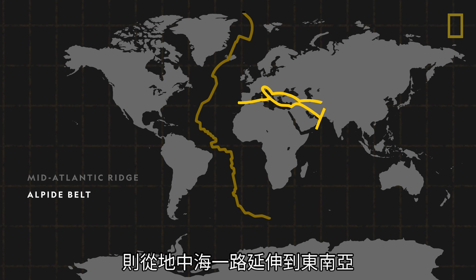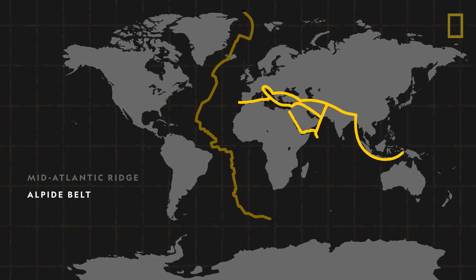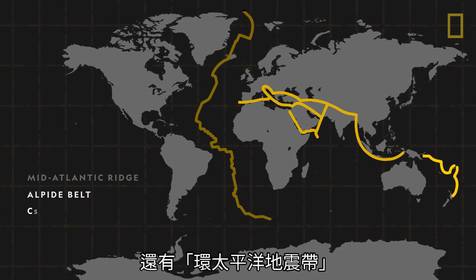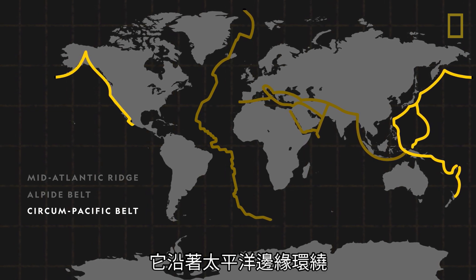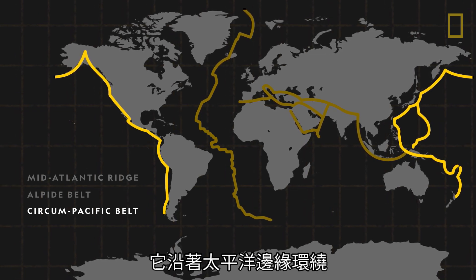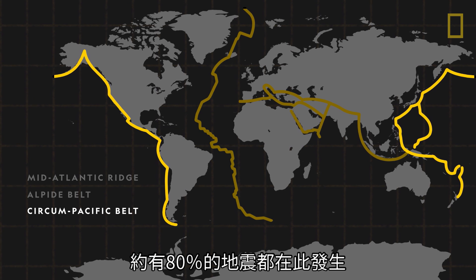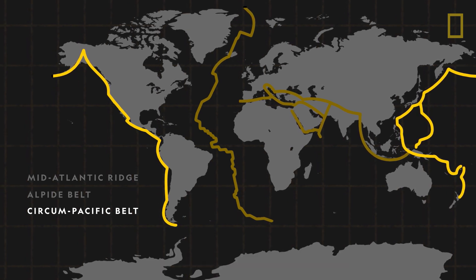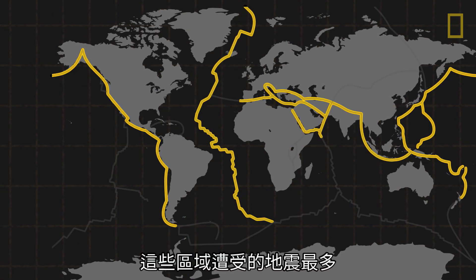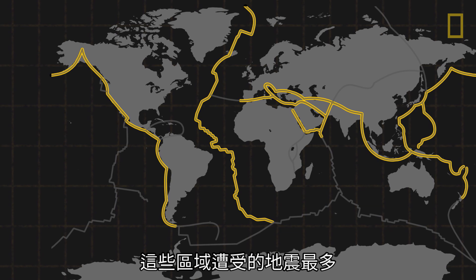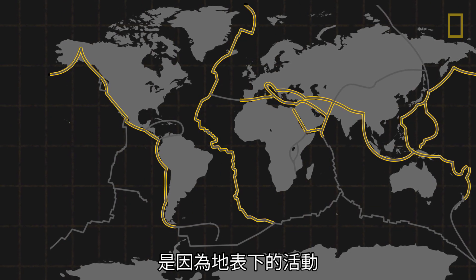which stretches from the Mediterranean to Southeast Asia, and the Circumpacific Belt, which traces along the edges of the Pacific Ocean and is where about 80% of all earthquakes occur. These areas experience the most earthquakes due to what lies beneath the surface.